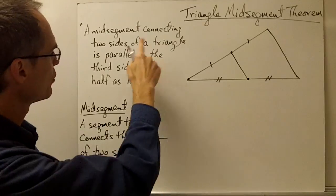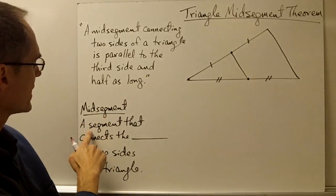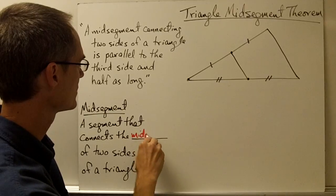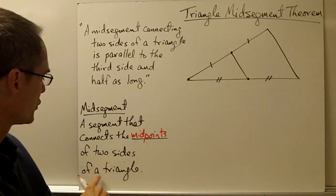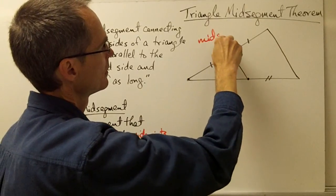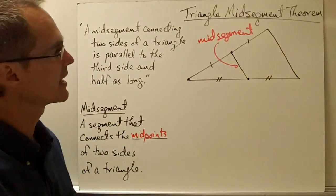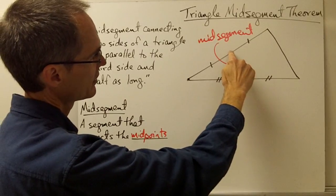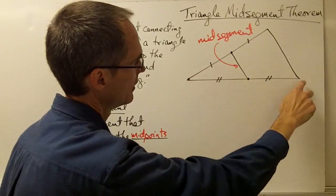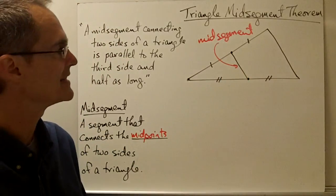Let's take a look at what this theorem is saying. A mid-segment is a segment that connects the mid-points of two sides of a triangle. In this picture, this is a mid-segment. This point is the mid-point of one side of the big triangle, and this point is the mid-point of another side, and this segment connects those two mid-points — so it's called a mid-segment.